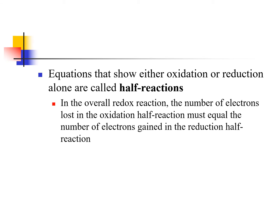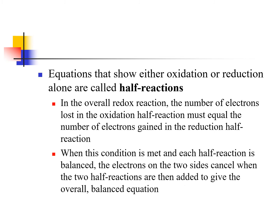In the overall reaction, the number of electrons lost in the oxidation half reaction must equal the number of electrons gained in the reduction half reaction, because electrons must be conserved. When this condition is met, each half reaction is balanced, the electrons cancel, and we get our overall balanced equation.